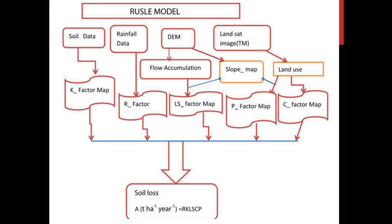From satellite imagery, we can perform land cover classification or derive vegetation indices such as NDVI, which are used to derive the C factor map and the P factor map. At the end, all five factors or parameters are multiplied together to produce the A factor — the soil erosion rate for each pixel, for each area, for a certain year.